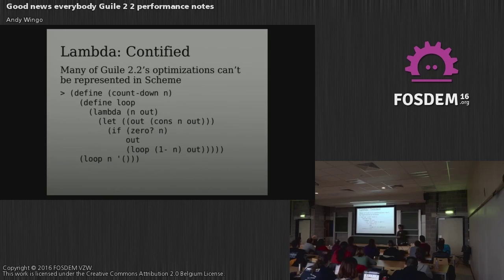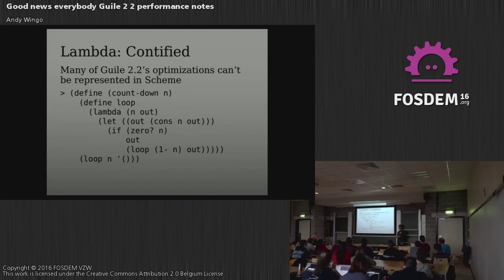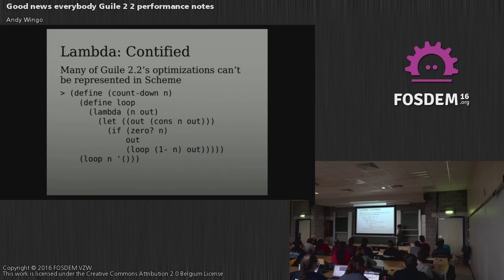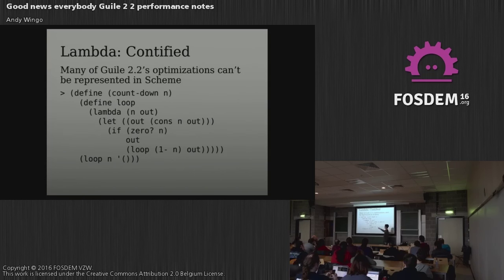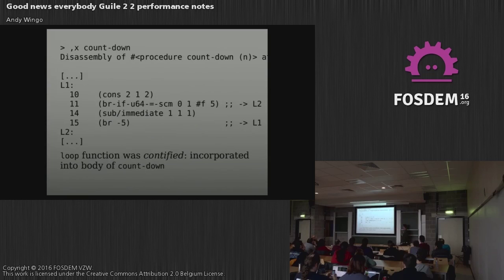The third way is new in Guile 2.2 — quantification. Quantification is when you take a function whose callers are all known, and which always returns to the same place, and you wire the call and the return directly into the calling function. Here's our countdown — I've expanded the named let so you can actually see the lambda that is going to get quantified. It has two callers: the caller at the end in the body, which is a tail recursive call, and the caller which starts the loop iteration.